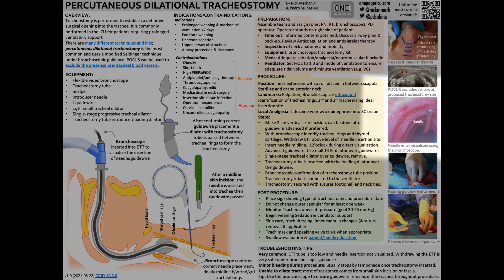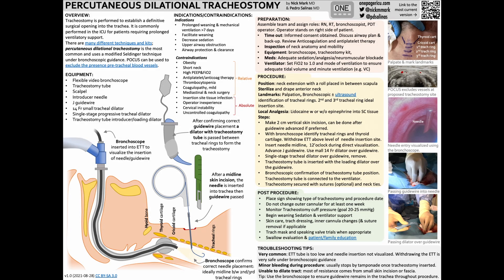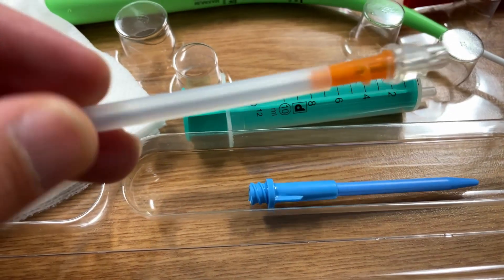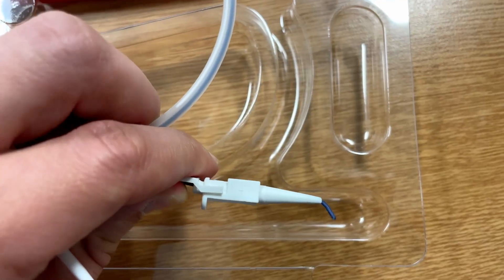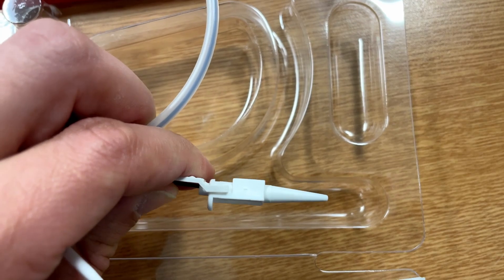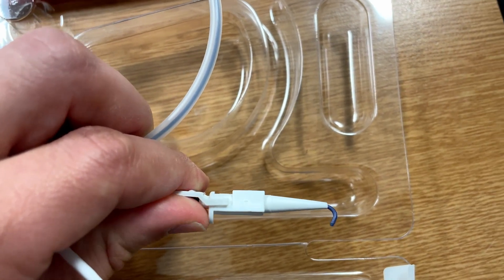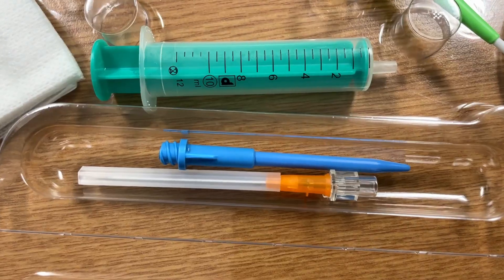Using the needle, they target the second or third tracheal ring. After that, they insert the guide wire, then the dilator, and finally place the tracheostomy tube.